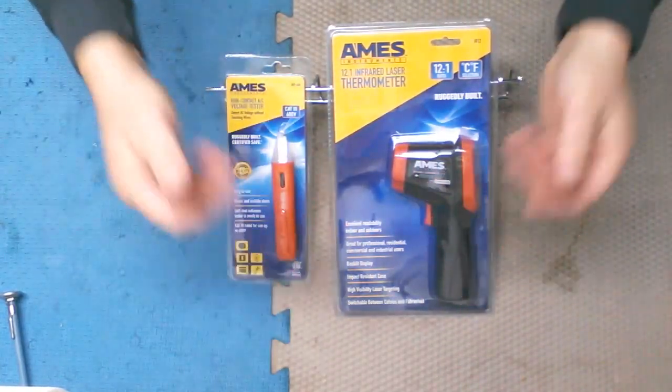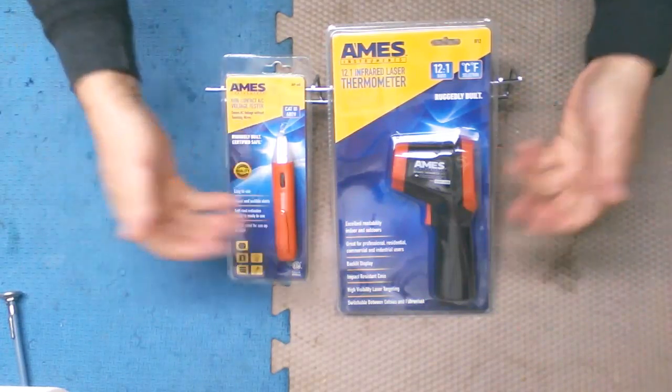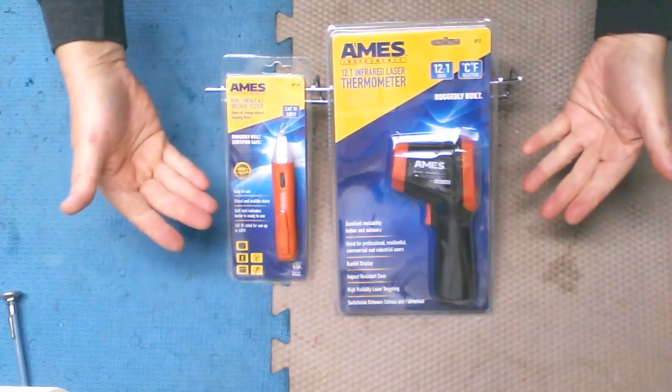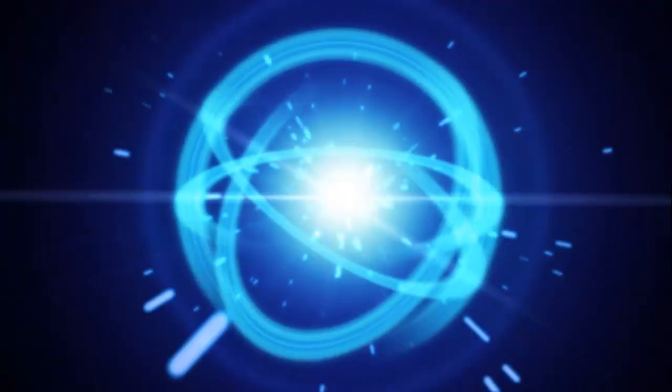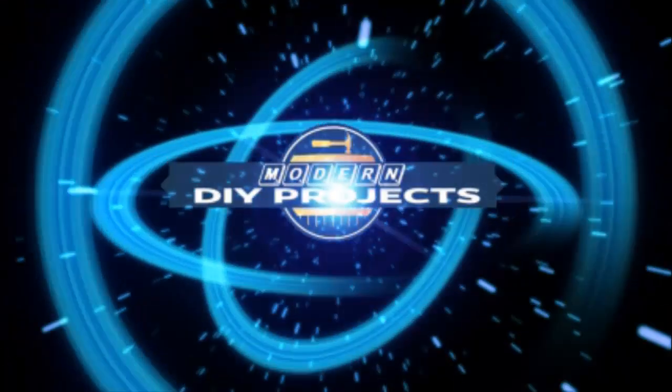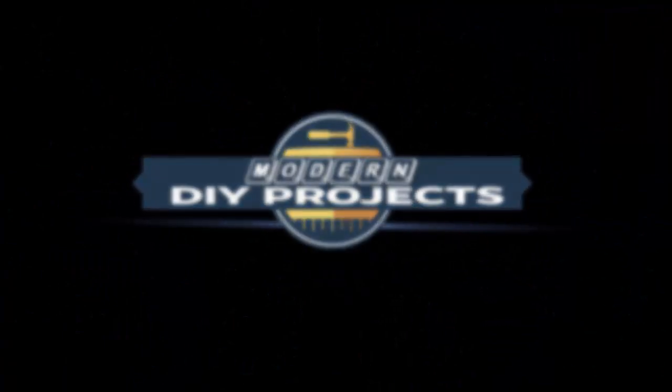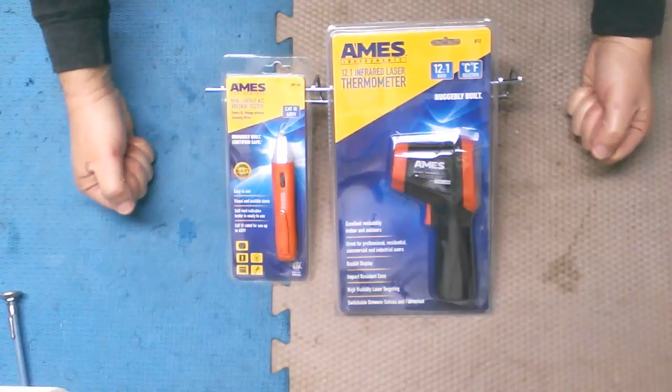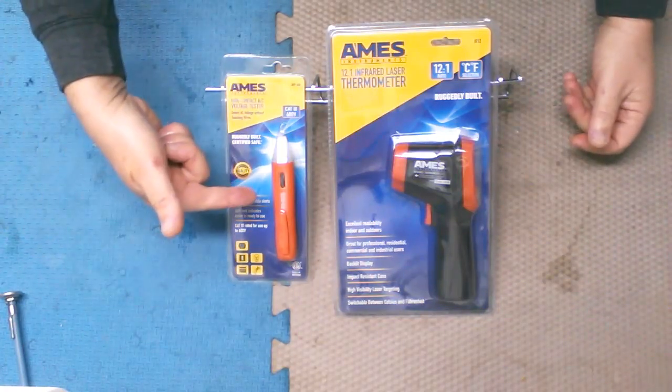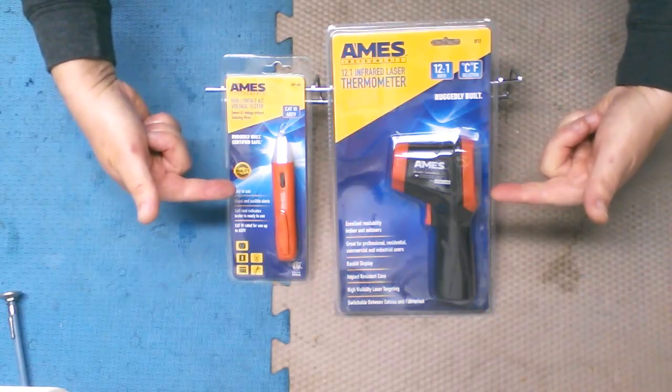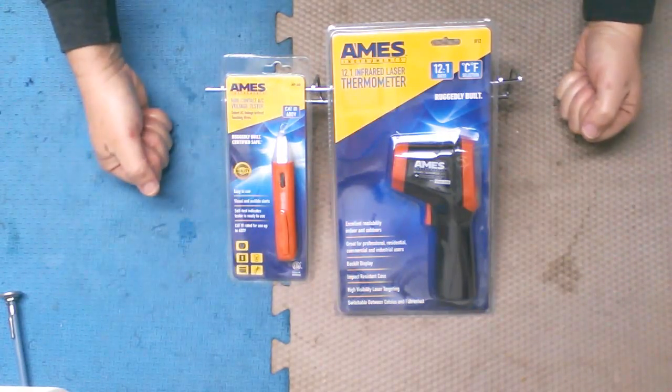Hello everyone and welcome today. We're going to be doing a couple of tool reviews. These are some small convenient little items that are good to have around the house to make your life easier. Today we're going to be reviewing a couple of different items here, one is a voltage tester and the other one is an infrared thermometer. Let's go into detail and look at each one separately.